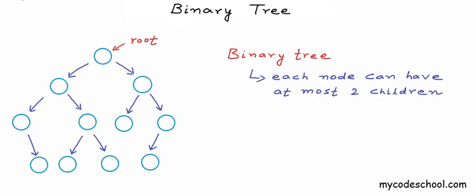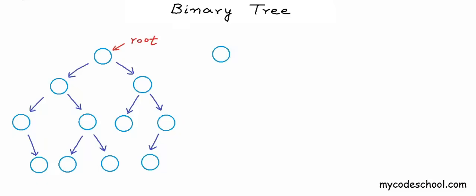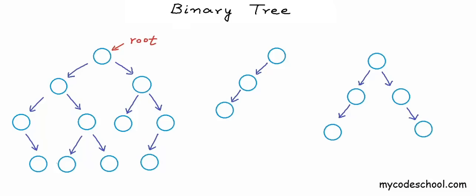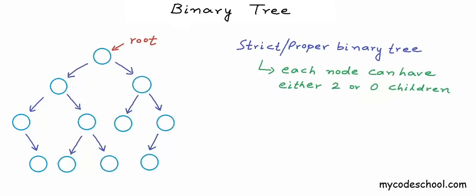Based on properties, we classify binary trees into different types. A binary tree with just one node is still a binary tree — the only condition is that a node cannot have more than two children. A binary tree is called a strict binary tree or proper binary tree if each node has either two or zero children, not one.